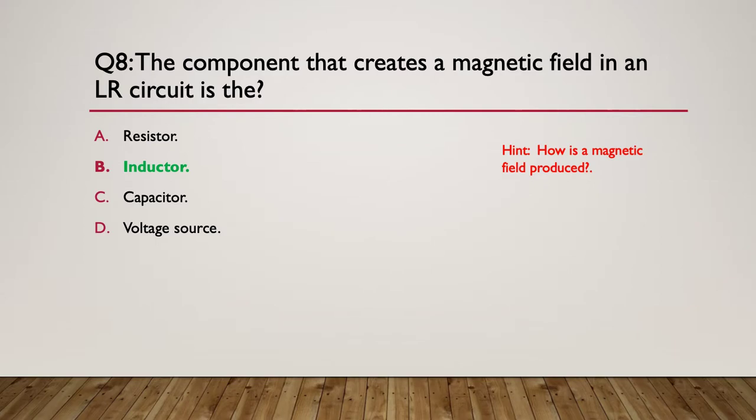So the answer is B, an inductor. A resistor will have a tiny little magnetic field around it - that's not its purpose. An inductor, because it's coils of wire wound around together, produces a lot of magnetic field. Magnetic fields don't get created around capacitors, nor do voltage sources have them.